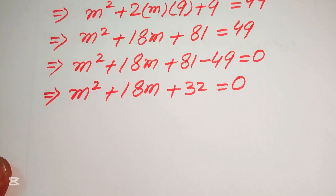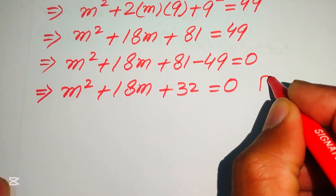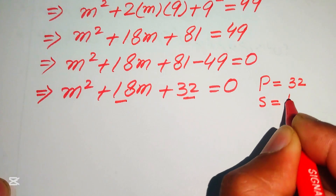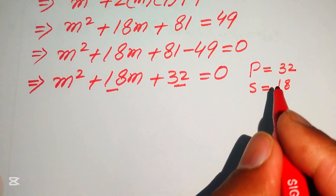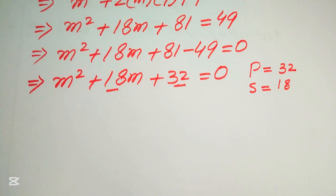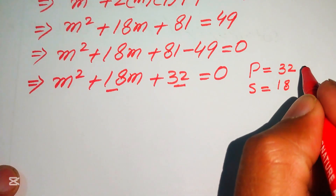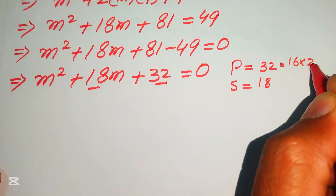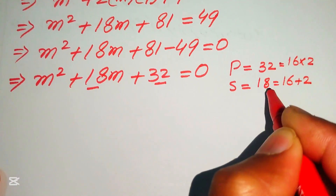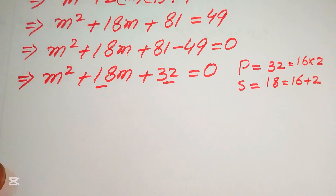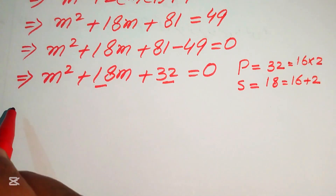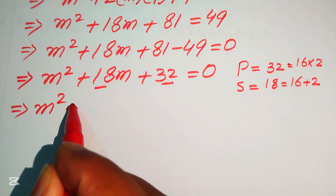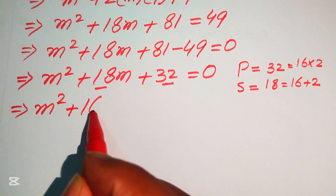For factorization, we need two numbers whose product is 32 and whose sum is 18. Those two numbers are 16 and 2, since 16 × 2 = 32 and 16 + 2 = 18. We break the middle term accordingly, writing 18m as 16m + 2m.